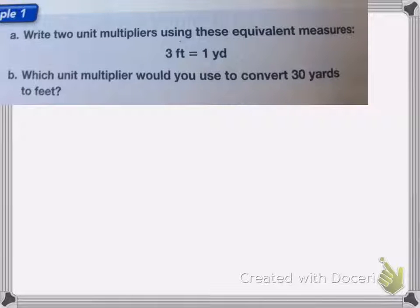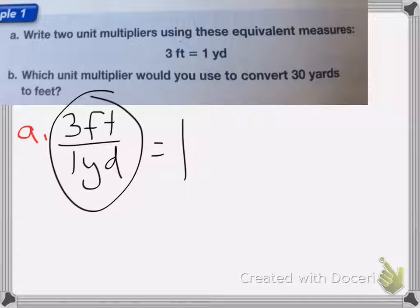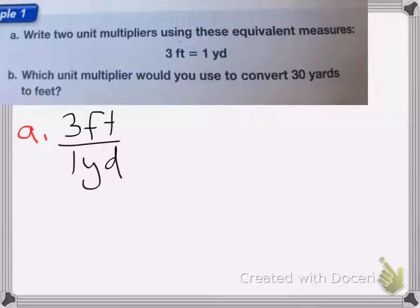The two unit multipliers I can make would be 3 feet over 1 yard. Now 3 feet over 1 yard is equal to 1 because it's the same amount. The other one I can make is 1 yard over 3 feet.